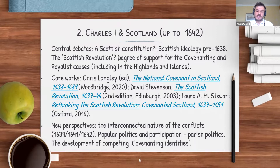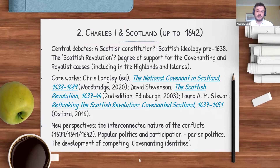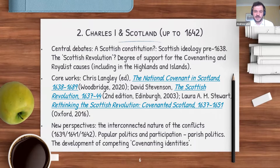Another big development is the degree of support for the Covenanting and Royalist causes in Scotland. Up until recently, it was understood that the Covenanting movement was more or less universally supported, and that the Royalist cause was very unpopular and quite regionalised. Work by myself, Chris Langley, and Laura Stewart has shown that there was division across Scotland throughout various levels of society. You can get quite an interesting discussion going in classes about the reasons for supporting the Covenanters versus the Royalists and look at different area case studies about how local areas reacted to the outbreak of civil wars in Scotland.